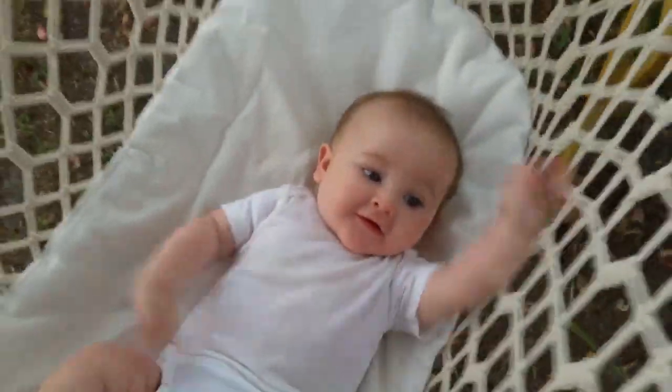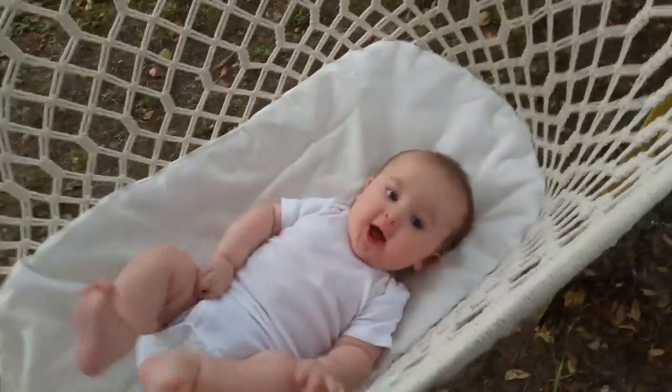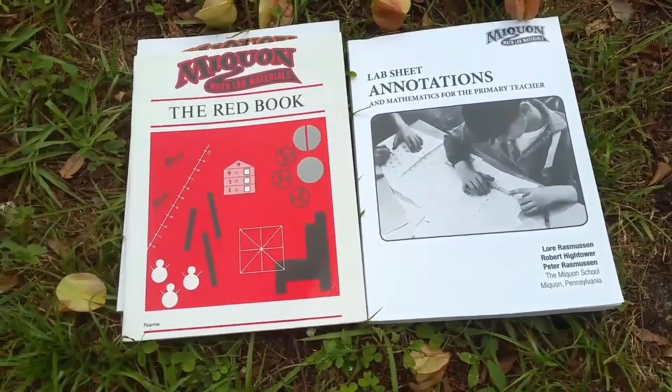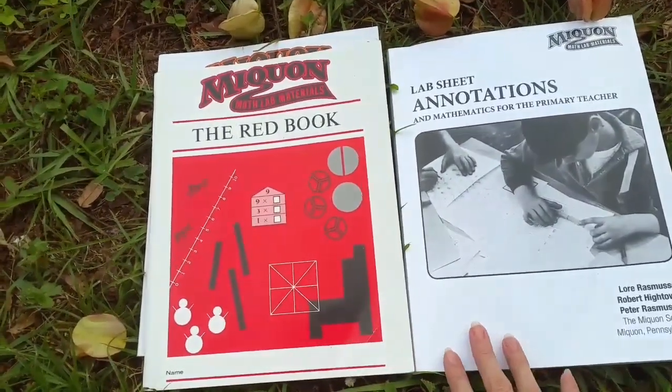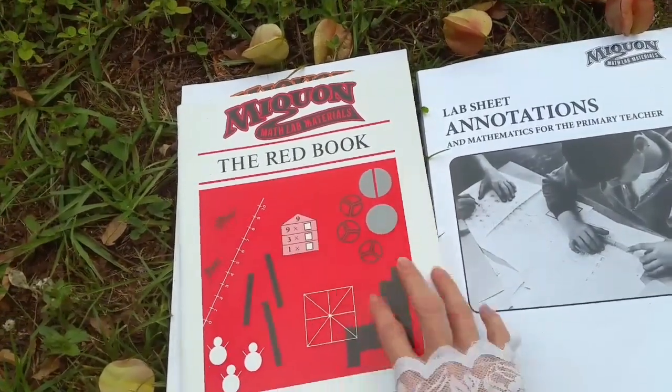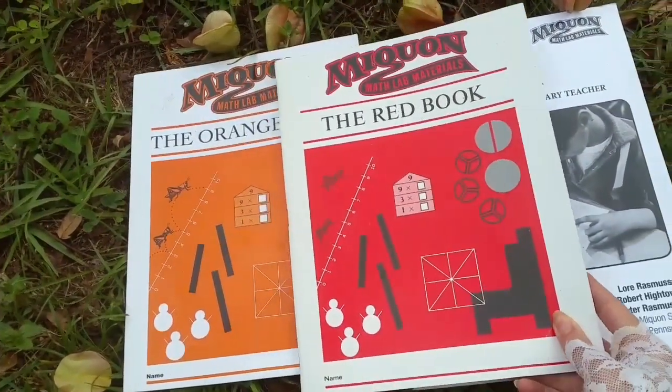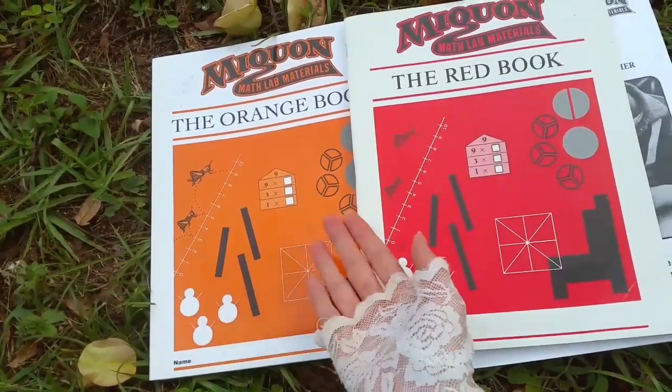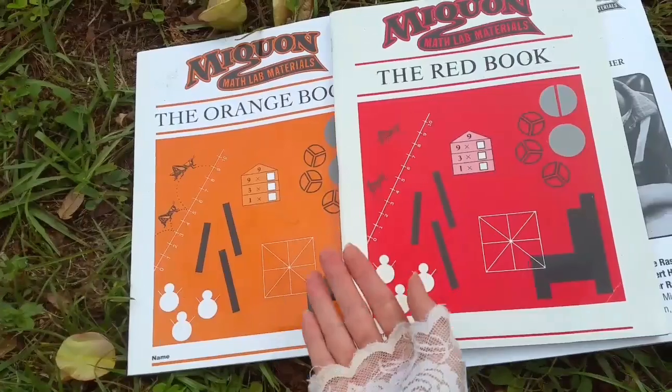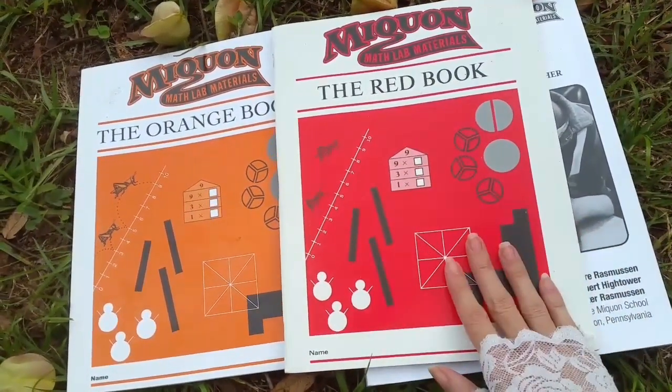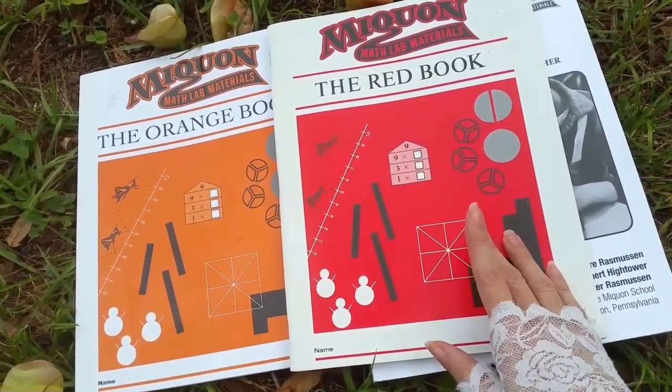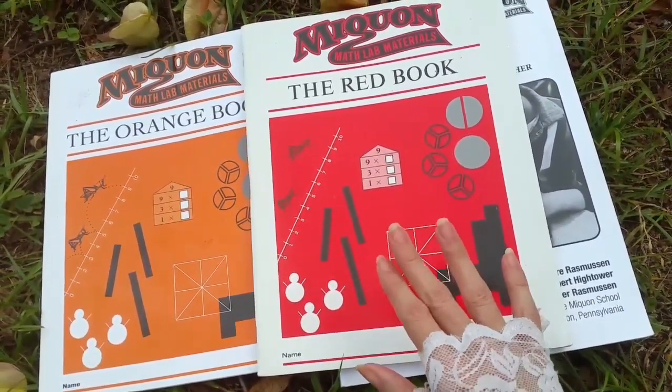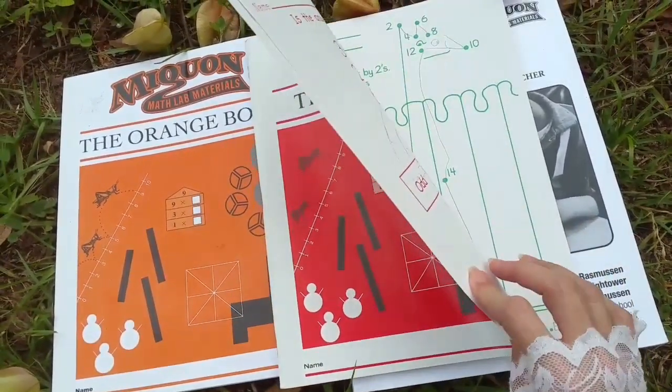So I got this curriculum used on eBay and I wasn't exactly sure where to start with it. This red book is about second grade I believe and then this orange book is like a first grade or kindergarten book. So I got the red book because my daughter is doing really good like first grade type math and I thought that she'd be ready to get into this right away. And in some ways she was, she did really well with this at first.